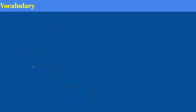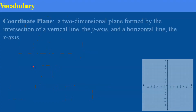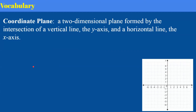Let's review some vocabulary before we begin. A coordinate plane is a two-dimensional plane formed by the intersection of a vertical line, the y-axis, and a horizontal line, the x-axis. So we have our vertical line, the y-axis, and our horizontal line, the x-axis. Together, this is a two-dimensional coordinate plane because we have x and y making it two-dimensional.